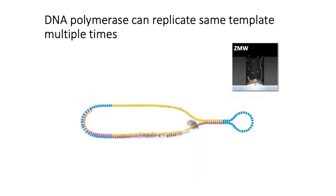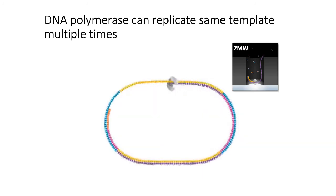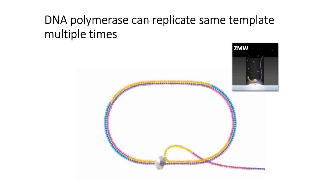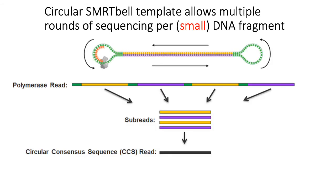Because the SmartBell templates are circular, each SmartBell template can get sequenced multiple times. After a primer is annealed and DNA polymerase extends it, by the time it goes all the way around the entire circular piece of DNA, it can kick out the old template and keep sequencing the same template over and over again. For small DNA fragments, this allows you to sequence the same fragment multiple times. Since the errors are random, you can take the consensus sequence from multiple passes over the same fragment and get a more accurate consensus read.